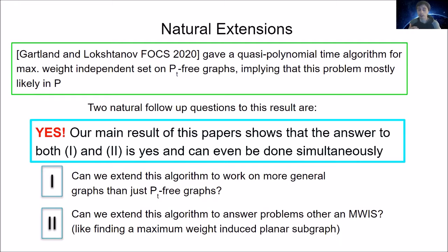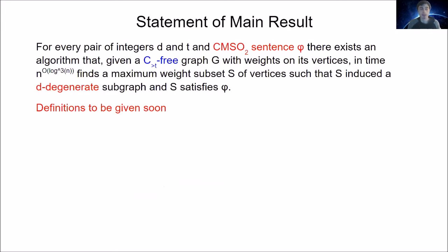Our main result shows that the answer to both questions is yes, and they can even be done simultaneously. For every pair of integers D and T and a counting monadic second order logic sentence φ (a CMSO₂ sentence), there exists an algorithm that given a C_{>t}-free graph G — meaning G has no induced cycle of length t or more — with weights on its vertices, finds in quasi-polynomial time a maximum weight subset S of vertices such that S induces a D-degenerate subgraph and S satisfies φ.